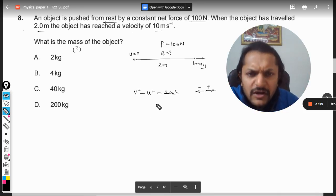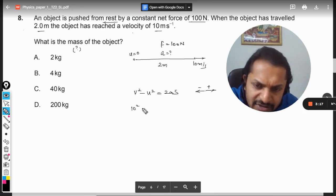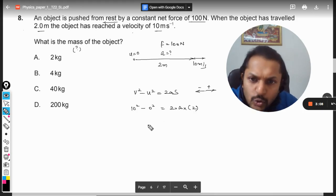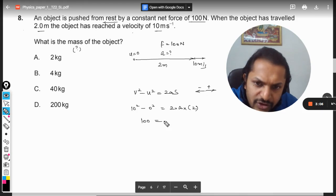We just substitute the values here: 10² - 0² = 2 × a × 2. Displacement will be positive because it is in this direction. So that will be 2. So 100 = 4a.